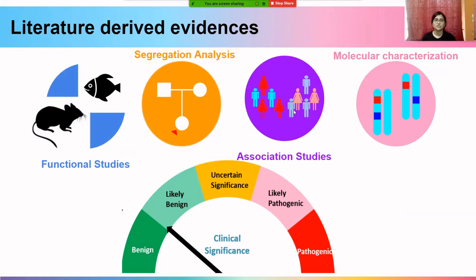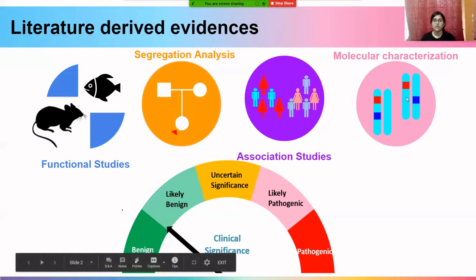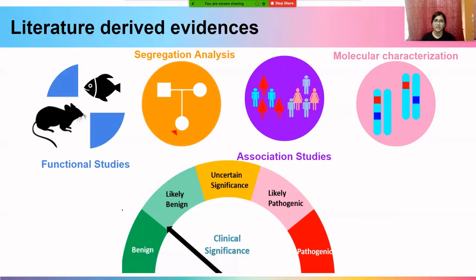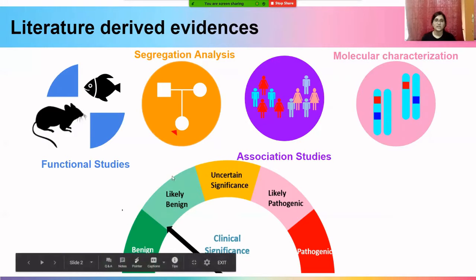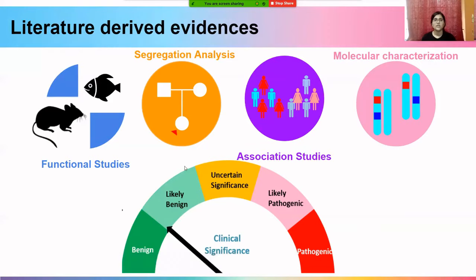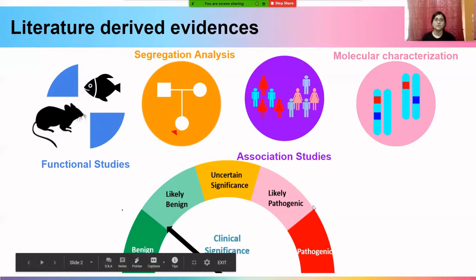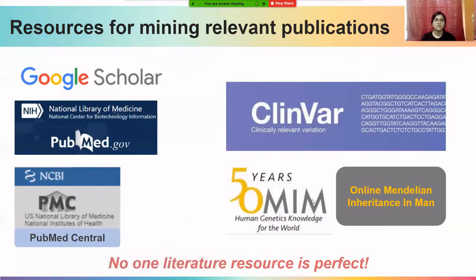Association studies showing the association of the variant with disease are also important. We are also interested in the molecular characterization of the variant — specifically, understanding if there are two variants in compound heterozygous form in a symptomatic individual, and whether the variant is present in cis form (both variants on the same allele) or on different alleles. On the basis of these evidences, we can understand the clinical consequence and whether the variant is classified as benign or pathogenic.